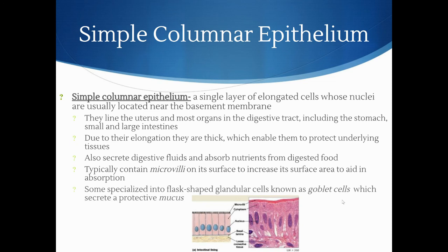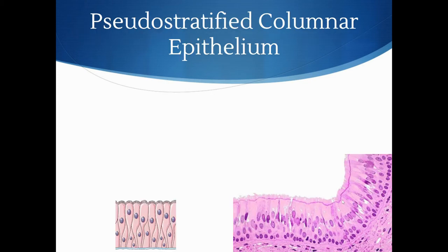Some specialized cells within simple columnar epithelium are glandular cells known as goblet cells, which secrete a protective mucus. The mucus helps protect the organs and reduce friction at that layer.